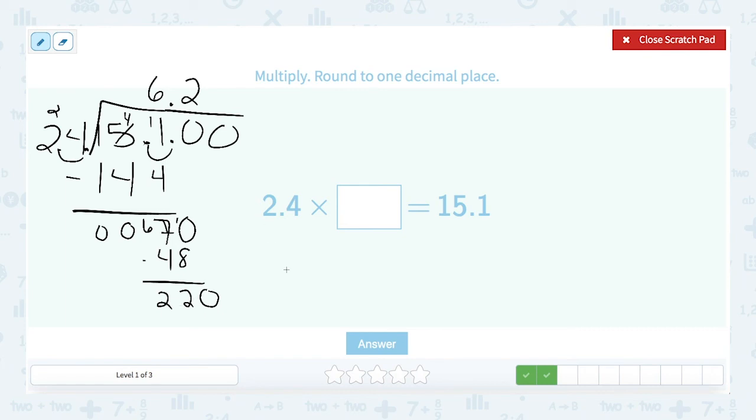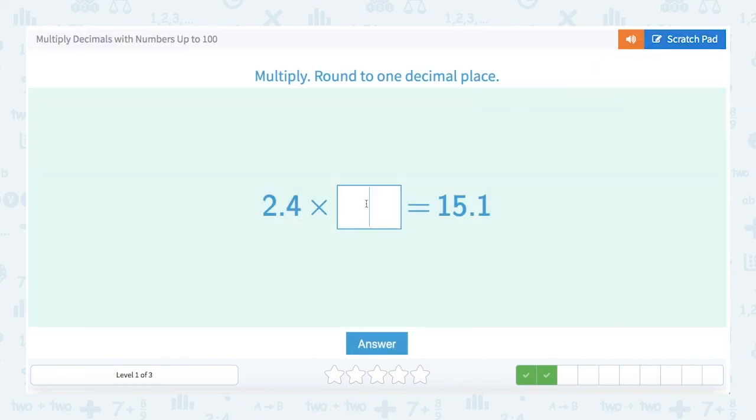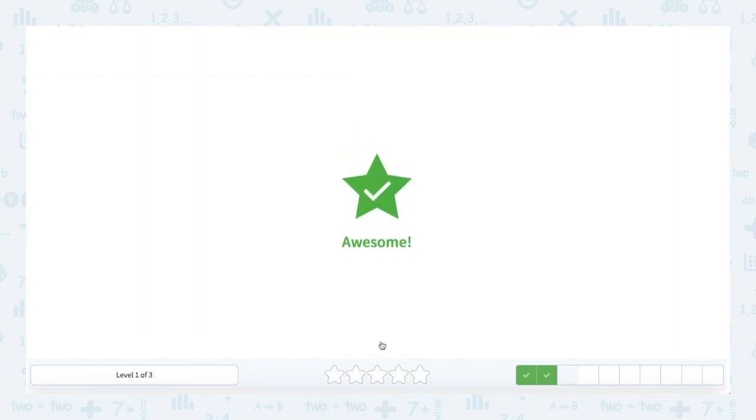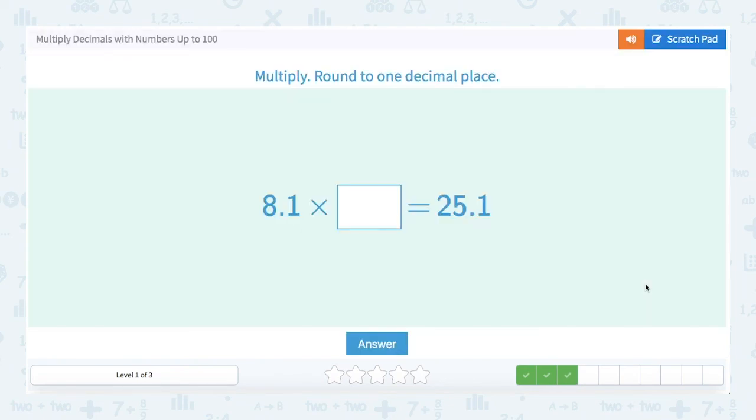So whatever goes right here is for sure bigger than 5. That tells me that this is going to round up. And so my answer to one decimal place is 6.3. Let's go ahead and try that out. And there we go. We have another one correct.